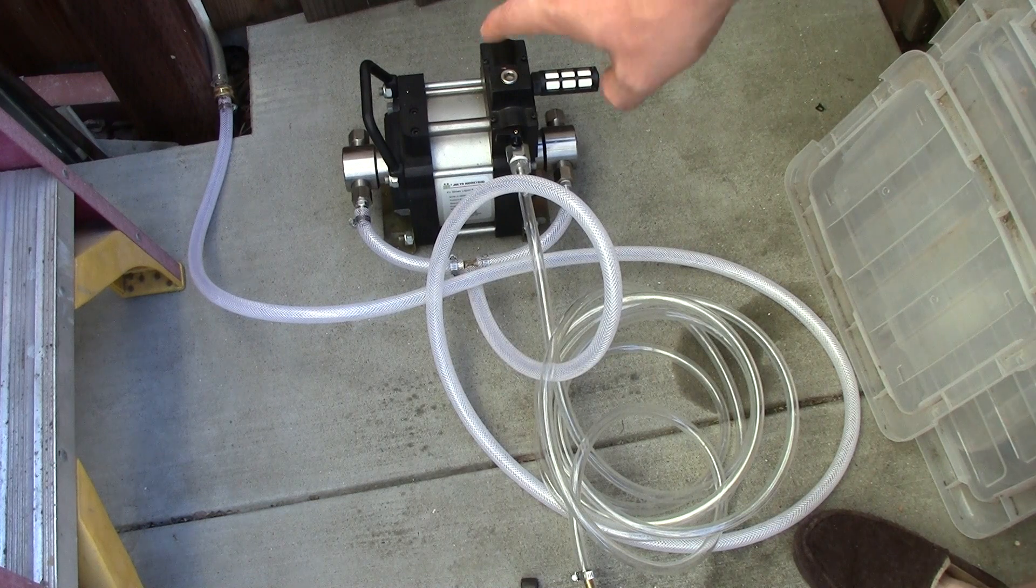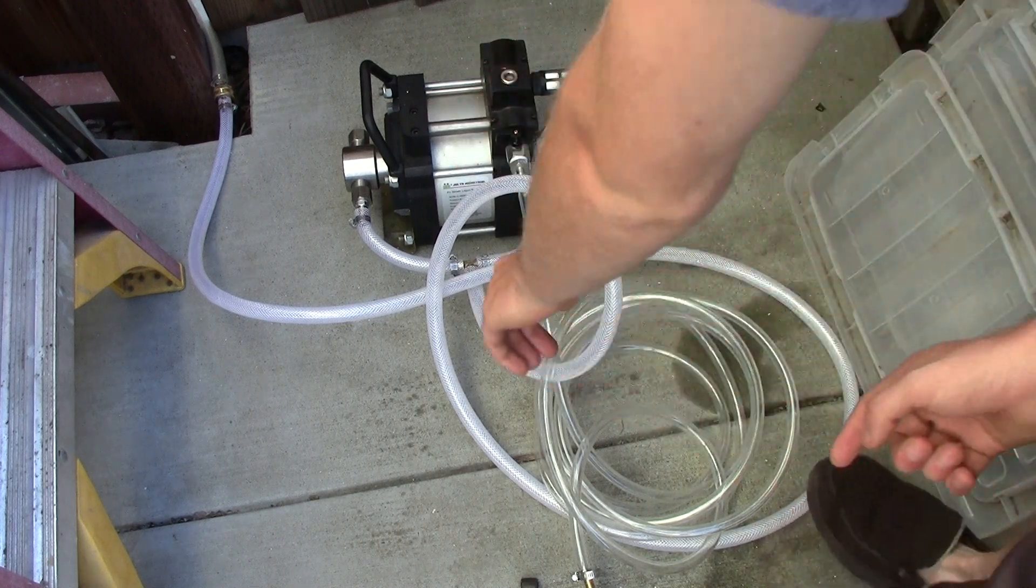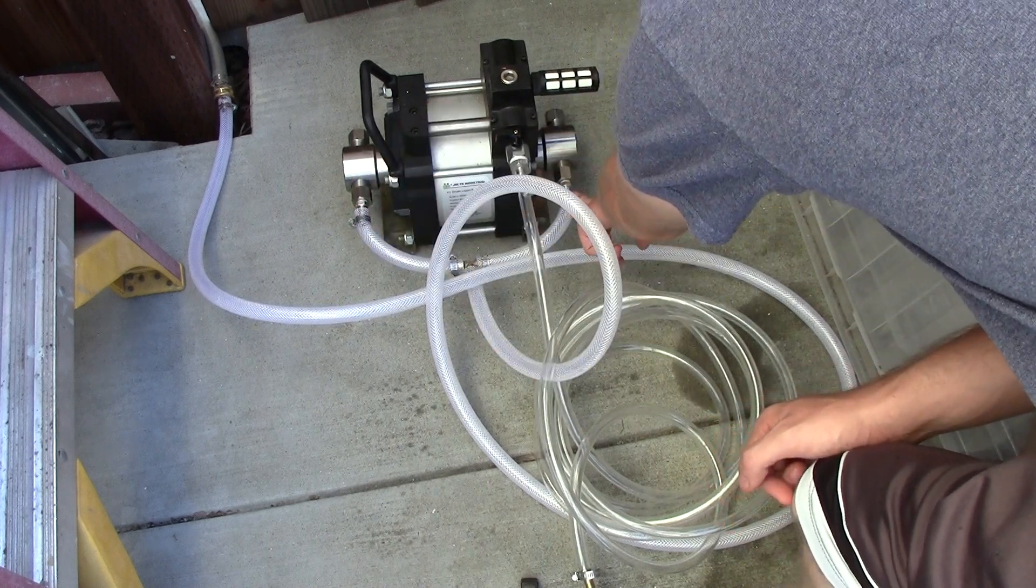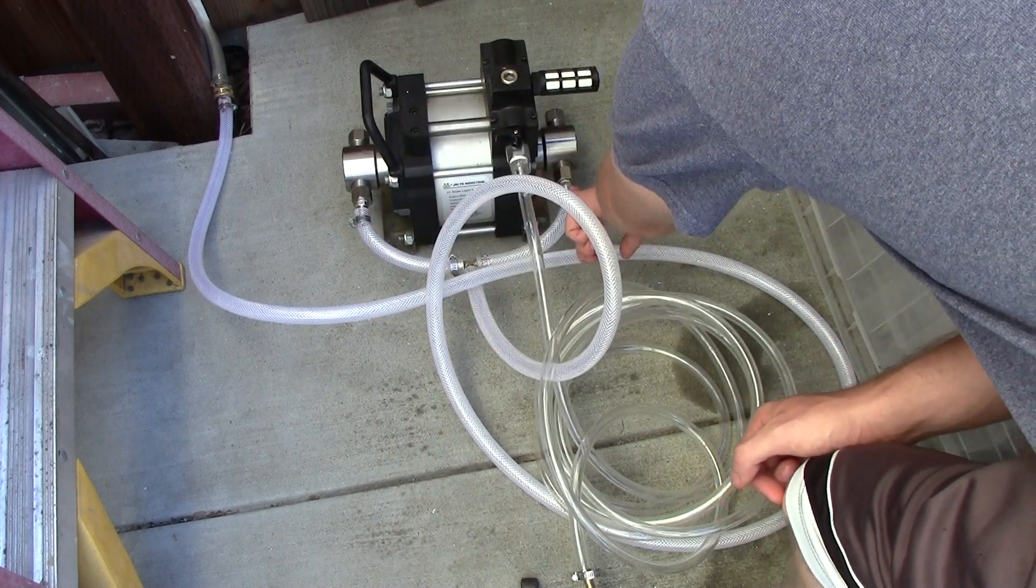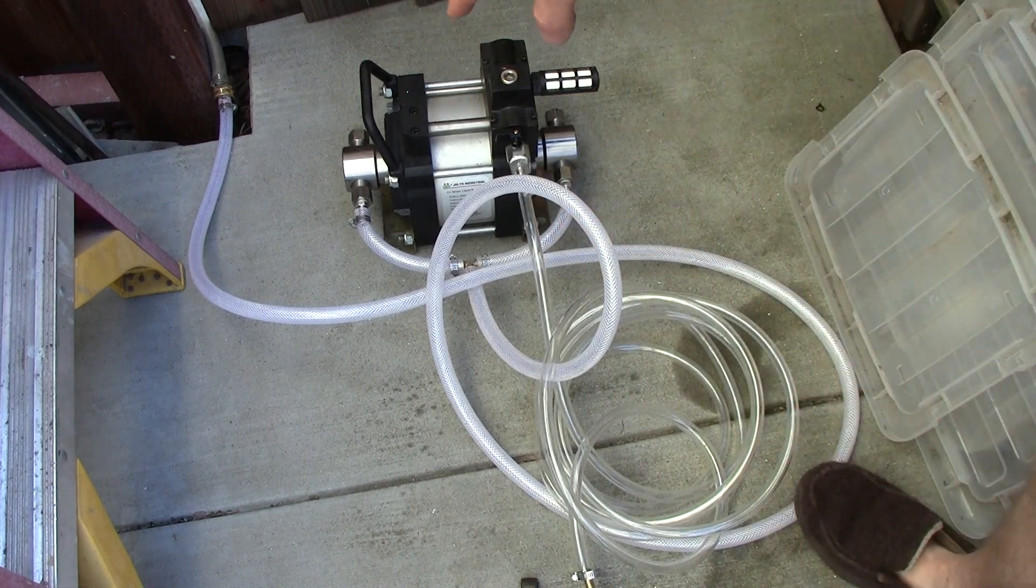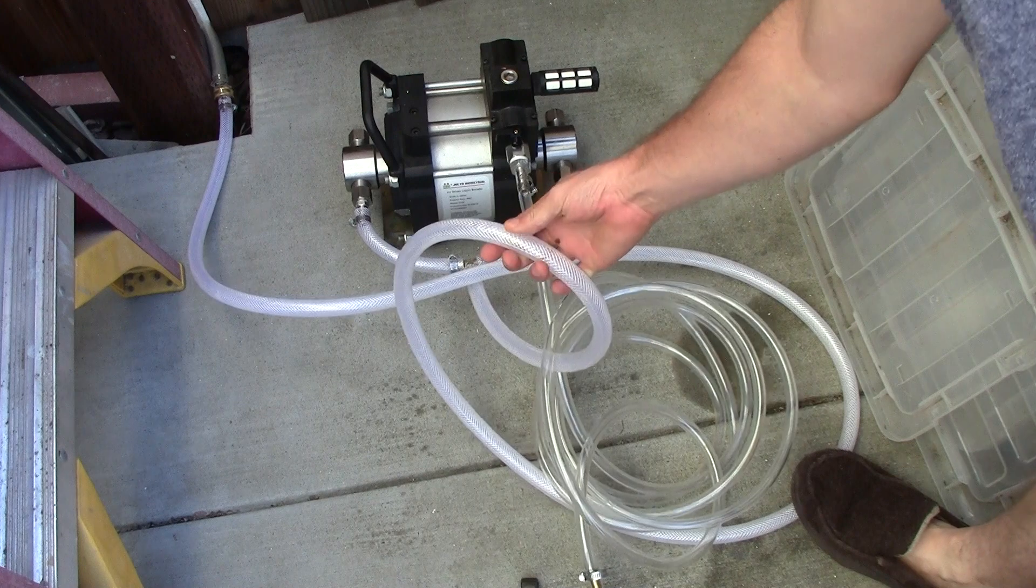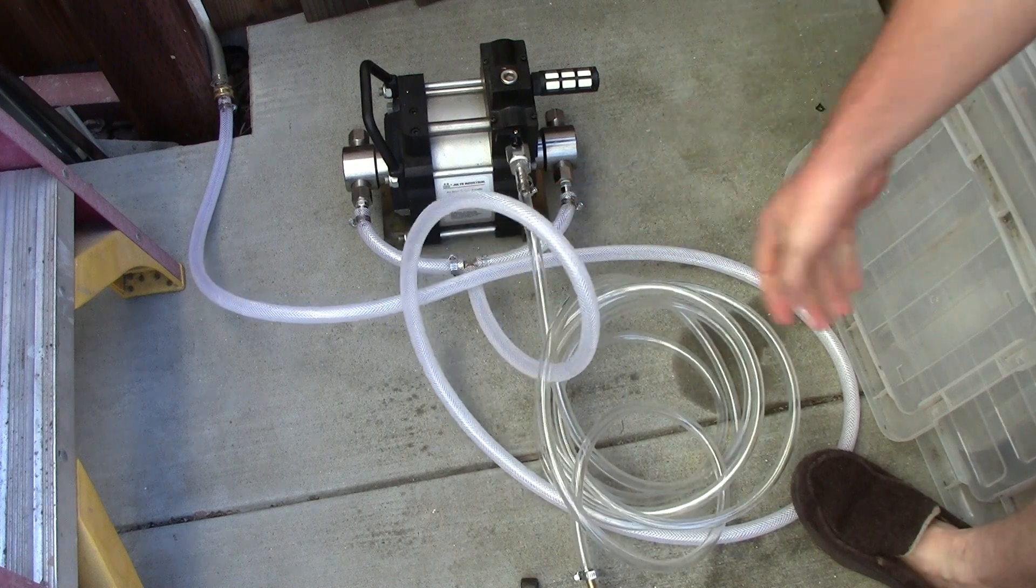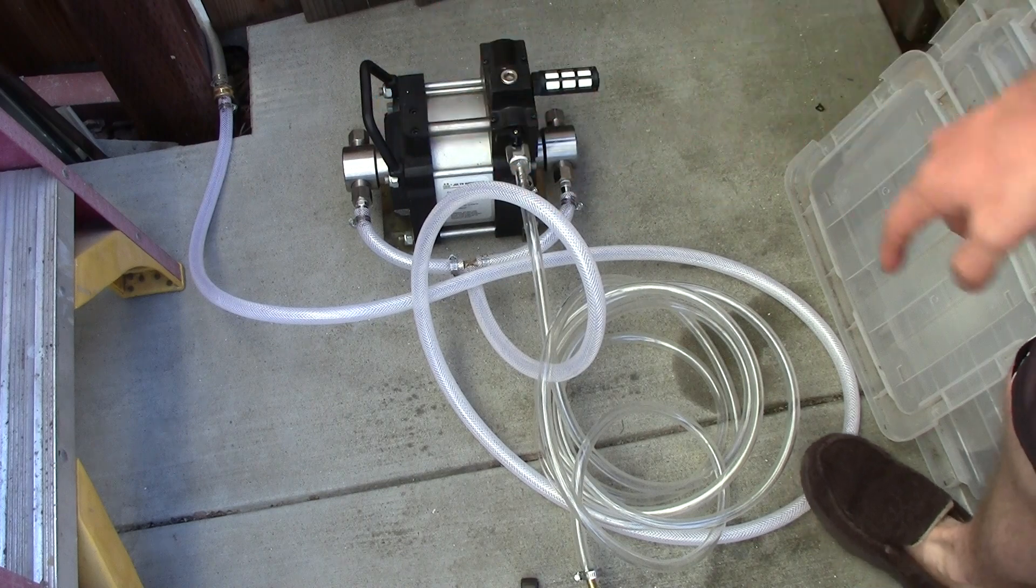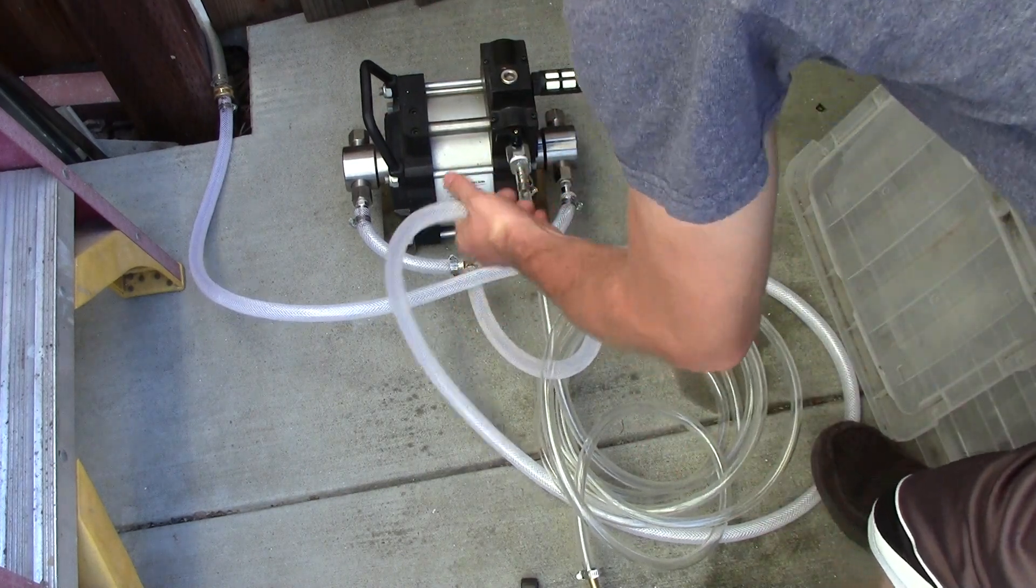So how do I have this set up? Because it's dual action, there are two inlet ports. One inlet port here, one inlet port here. These are both quarter inch MPT and I have them to half inch barbs, running some braided nylon half inch ID tubing. The tubing goes to the half inch barbs and then I have a half inch T to go from one line.